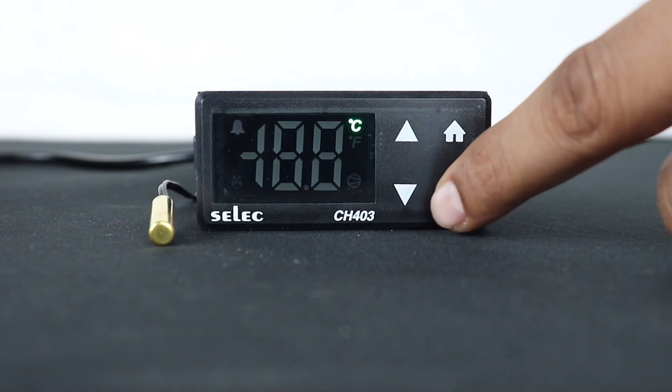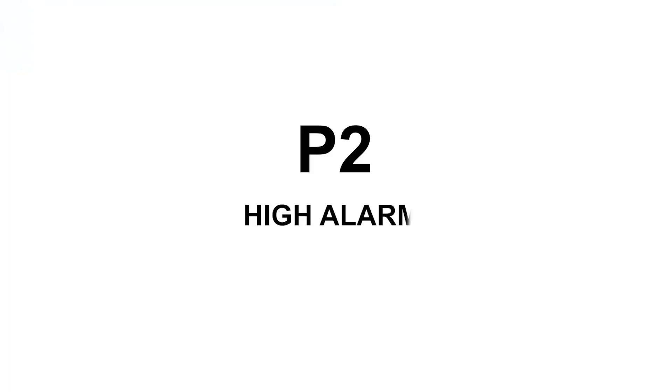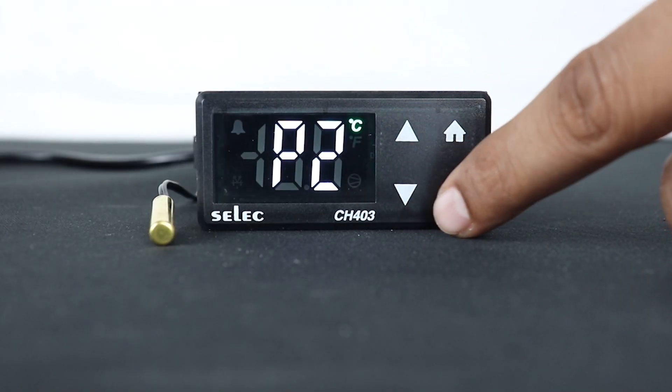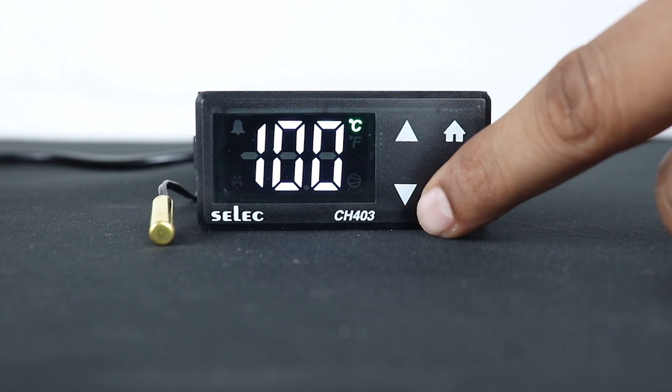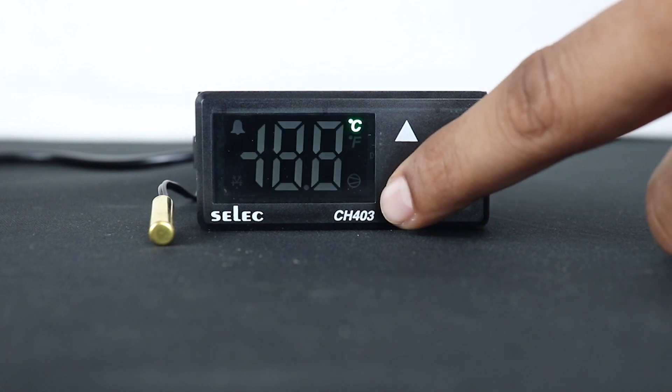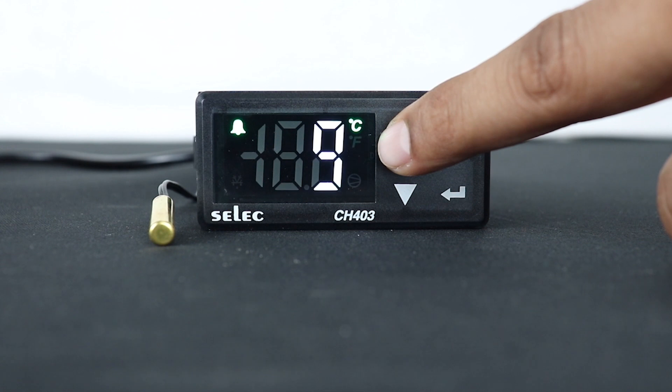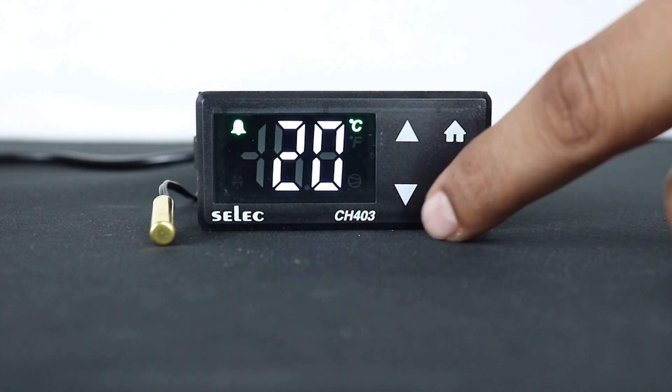To save the control mode, press the enter key once to the next parameter, that is P2 which denotes high alarm. Press the enter key to edit, up and down keys to increment and decrement the value respectively. Here we are taking 20 degree Celsius temperature as high alarm. To save the value, press enter key once.